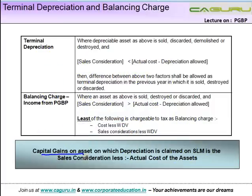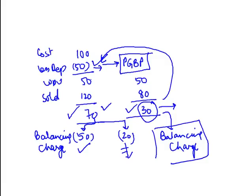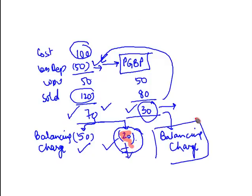What happens to the rest? Capital gain on an asset where depreciation is claimed on SLM equals the sale consideration less the actual cost of the asset — which is nothing but the remaining 20. The sale consideration is 120 less actual cost of 100, so 20 is your capital gain. In the other case there is no capital gain, because the sale consideration is less than the cost of acquisition.